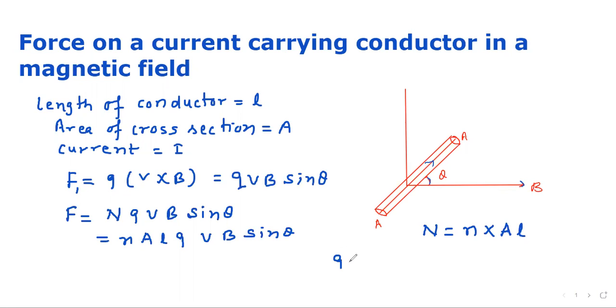Here, Q can be written as e. So, we can also write it as n A L e V, and V can be replaced by V_D, drift velocity.